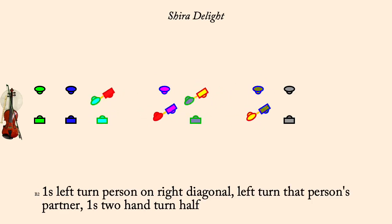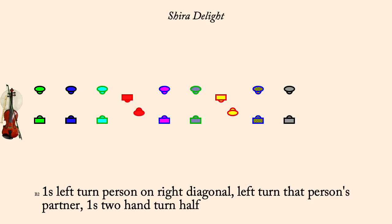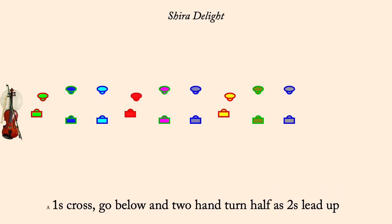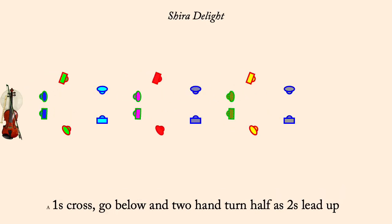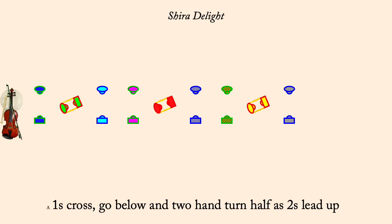Ones cross, go below, and two-hand turn half as twos lead up. Ones cross, go below, and two-hand turn half as threes lead up.